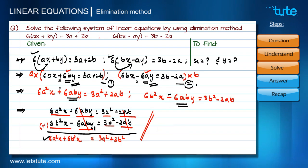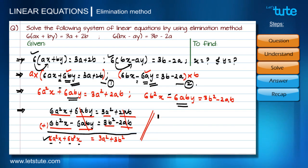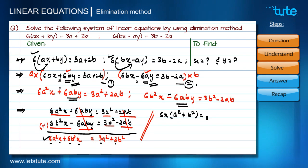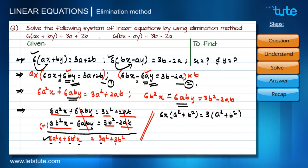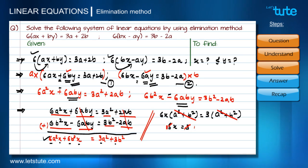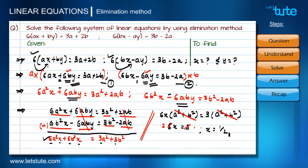From the resulting equation, we take 6x common from the left side to get 6x(a² + b²). On the right side, taking 3 common gives 3(a² + b²). The (a² + b²) terms cancel, leaving 6x = 3, so x = 1/2.